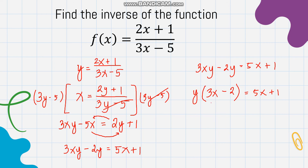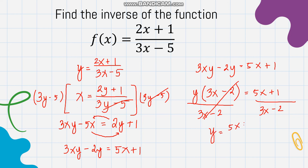Dividing both sides by (3x - 2), we get y = (5x + 1)/(3x - 2). Changing y to f⁻¹(x), the inverse is f⁻¹(x) = (5x + 1)/(3x - 2).